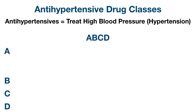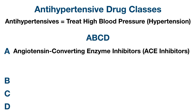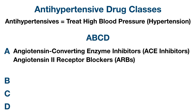A will stand for several different antihypertensive medications. The first one being angiotensin converting enzyme inhibitors, also known as ACE inhibitors. The second A stands for angiotensin 2 receptor blockers, also known as ARBs. And the final A stands for alpha blockers.